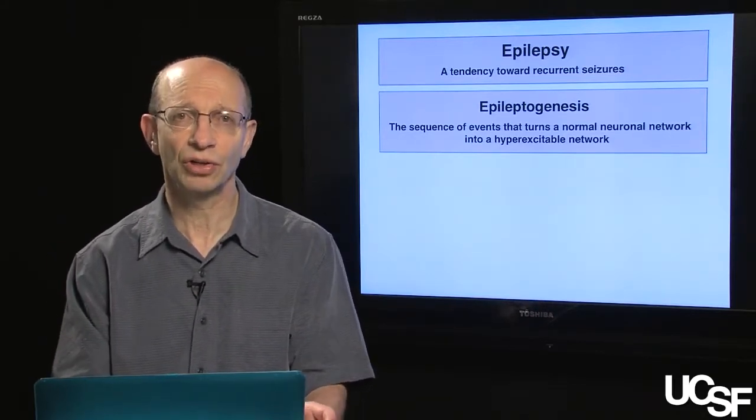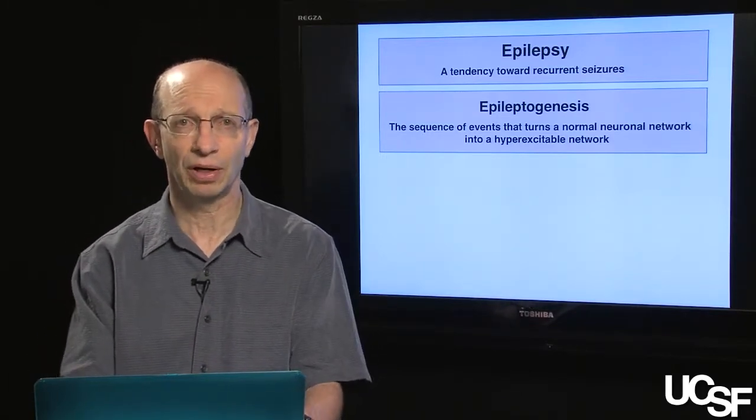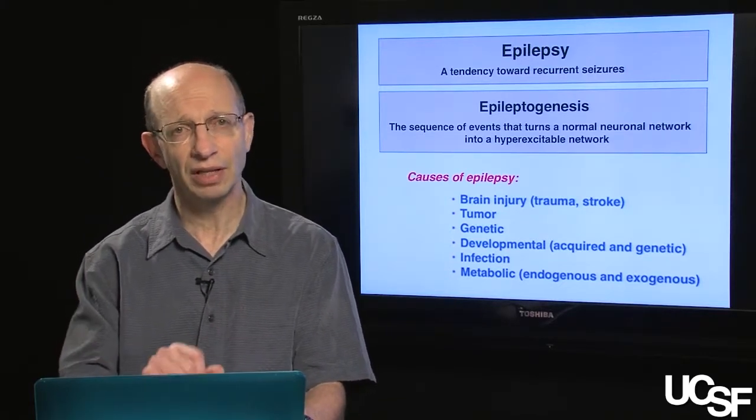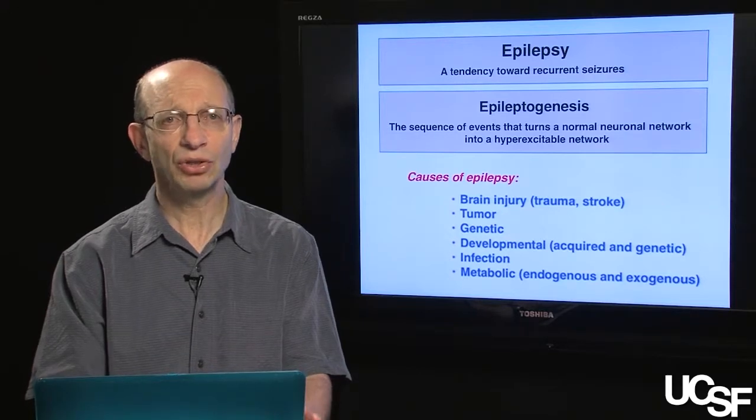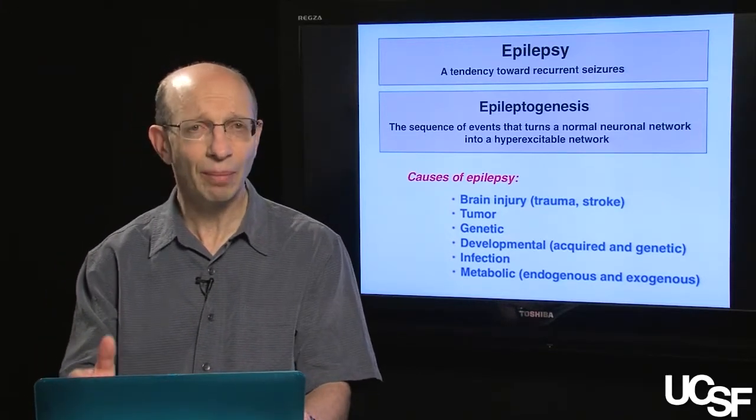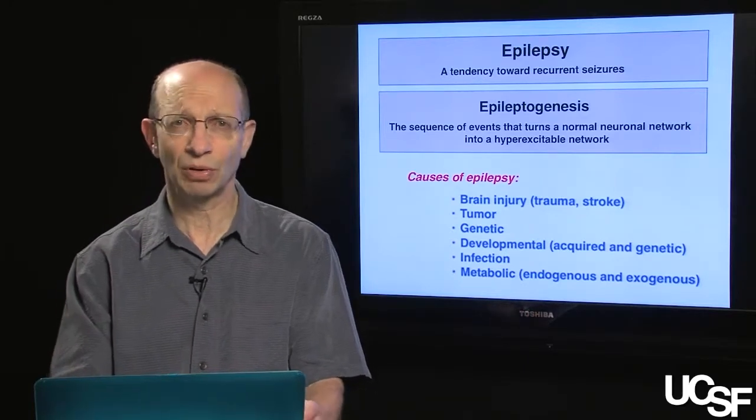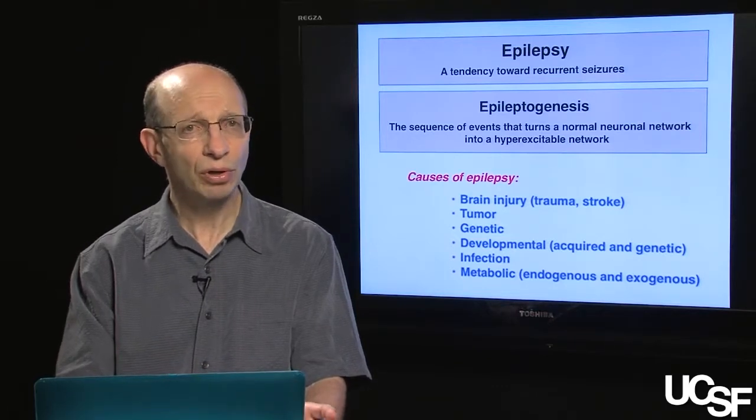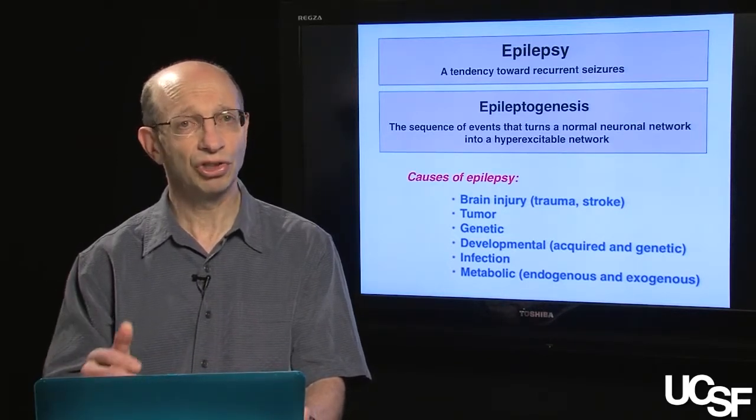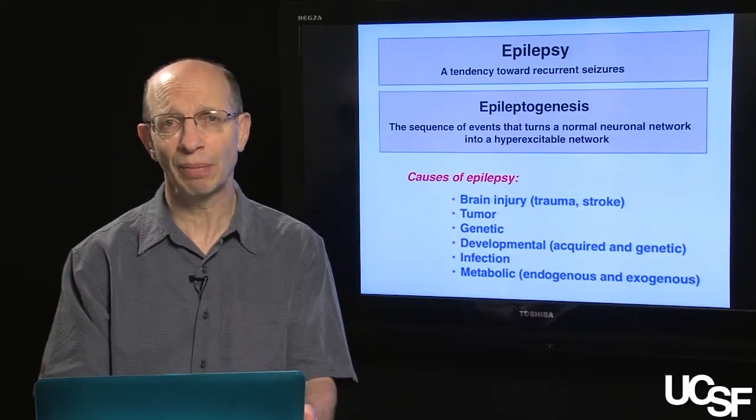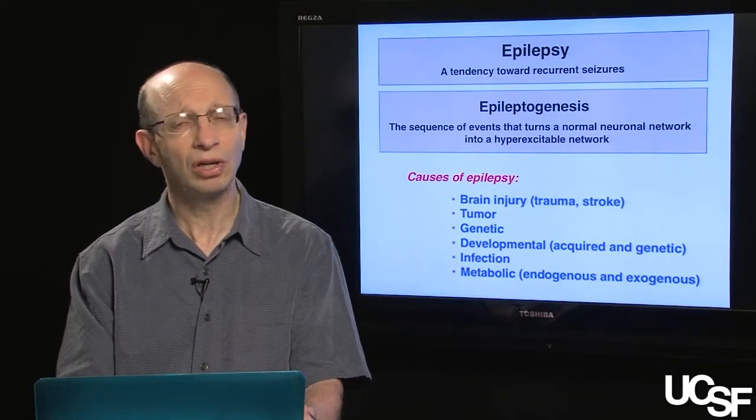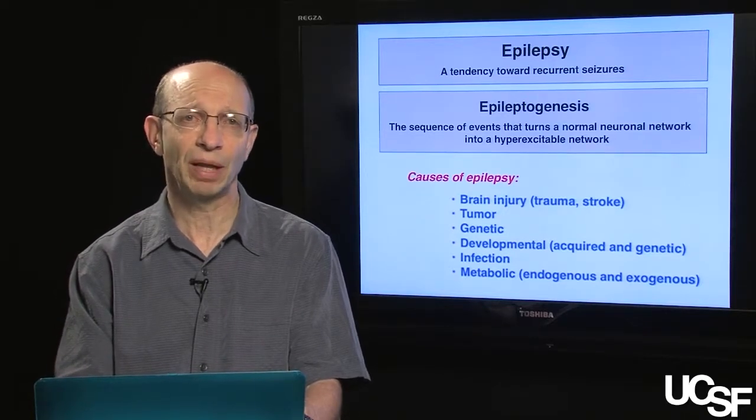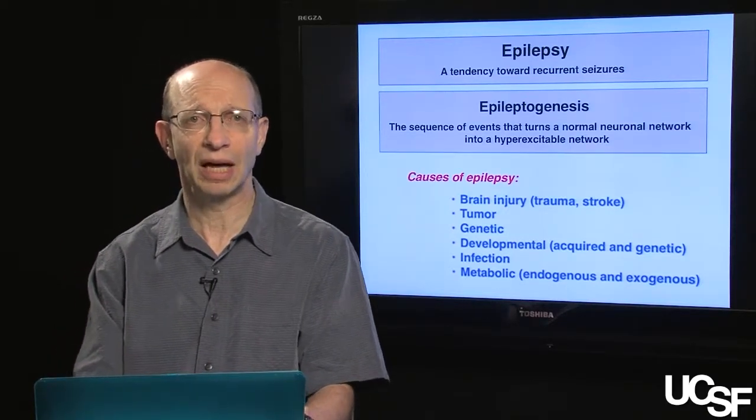Epileptogenesis is the sequence of events that turns a normal neuronal network into a hyperexcitable network. Here's a brief list of the causes of epilepsy. We'll delve into this more in a subsequent module, but I wanted you to get a general look at some of the different causes. There's brain injury, traumatic brain injury or stroke affecting brain tissue. Tumors can lead to seizures and epilepsy. There are genetic causes of epilepsy. There are developmental abnormalities that either occur because of genetic disease or are acquired typically in utero. Infections can cause seizures and epilepsy, and a whole variety of metabolic derangements can as well.